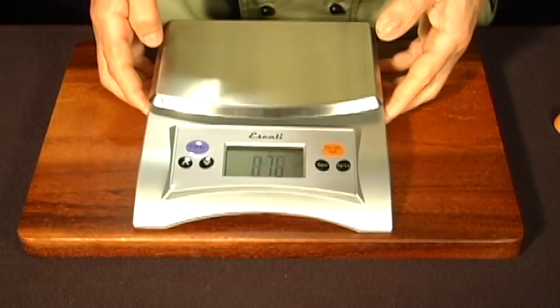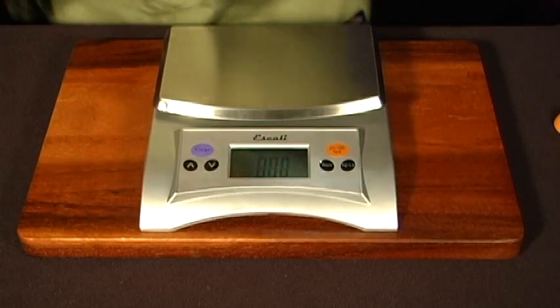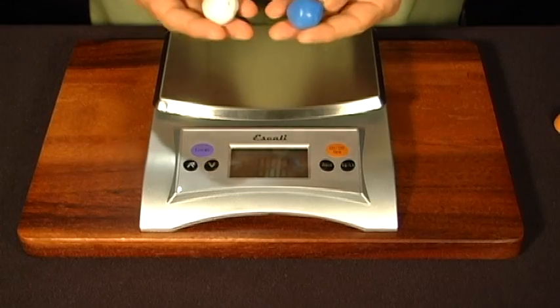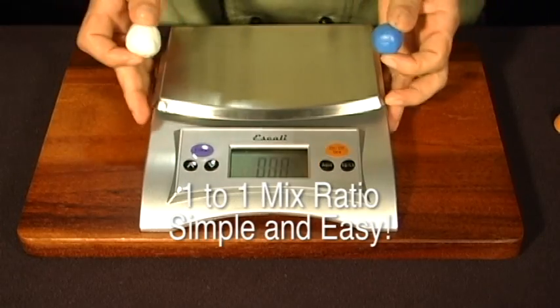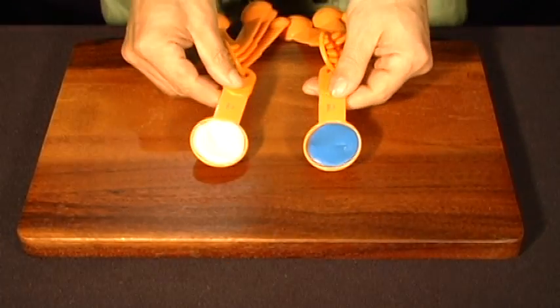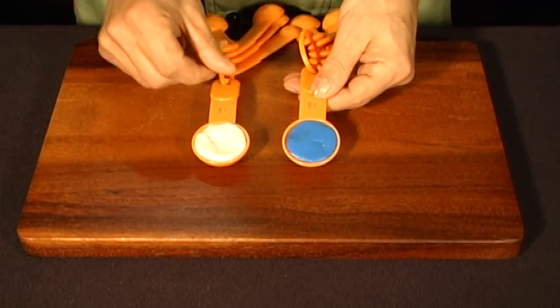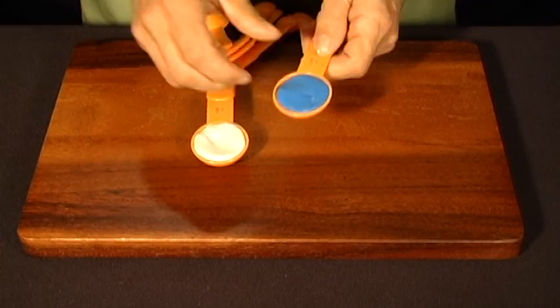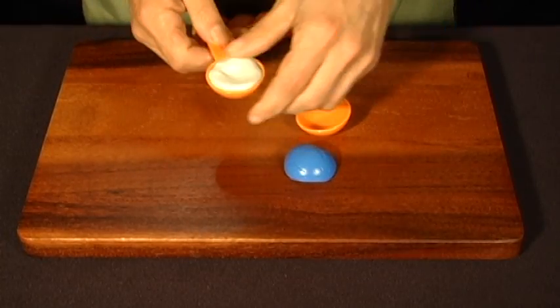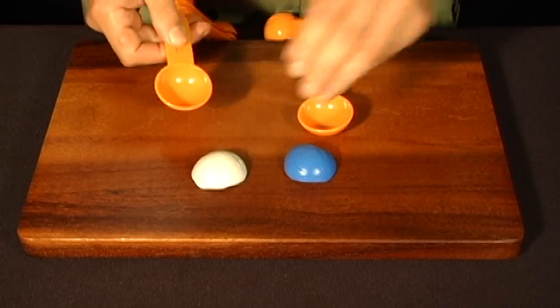To mix silicone plastique, a scale can be used to weigh equal amounts of Part A and Part B. This is called a one-to-one mix ratio. If you do not have a scale, you can use volume measurements like tablespoons and cups to portion the same quantity of the two parts before mixing.